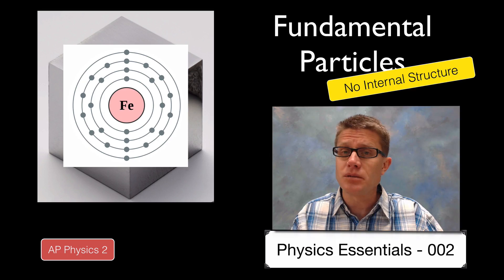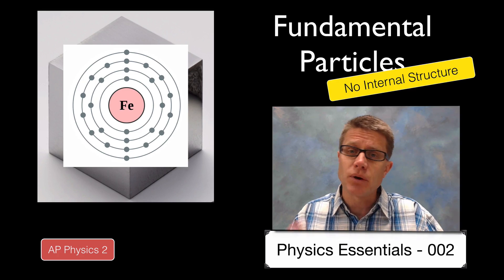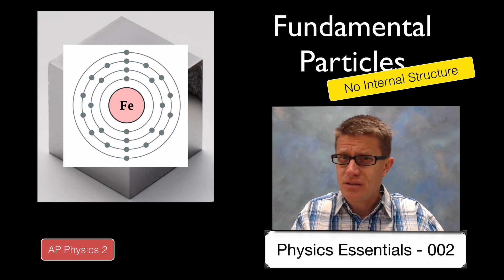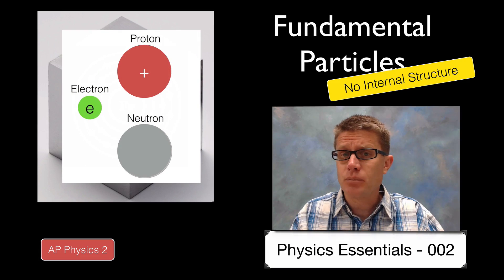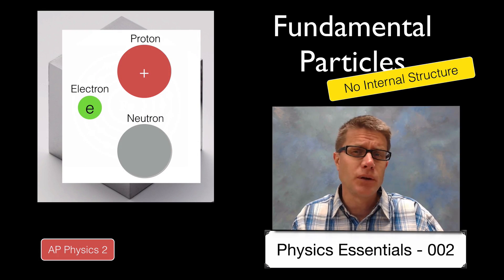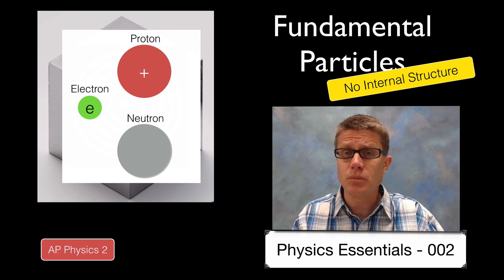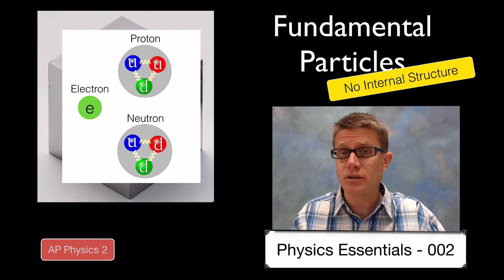You know that an atom is made up of an atomic nucleus surrounded by these negative electrons. And so are those fundamental? Well you know that the nucleus itself is made up of protons and neutrons. And if we look into those protons and neutrons you may not know it, but they are made up of quarks themselves.